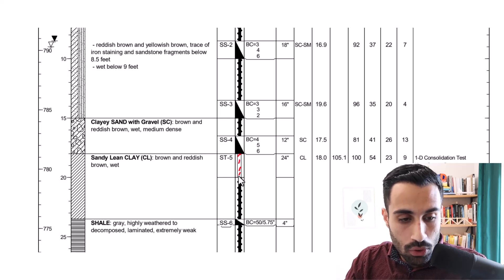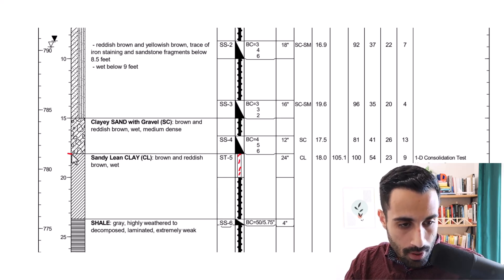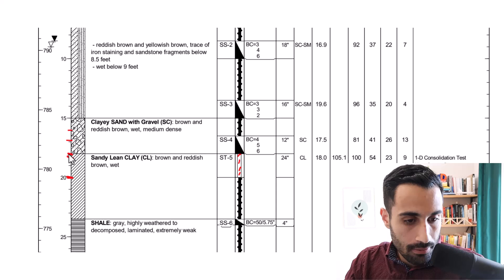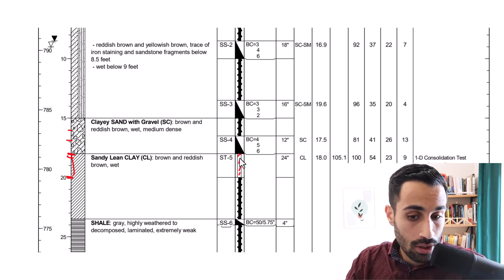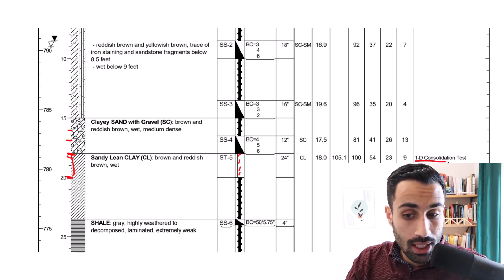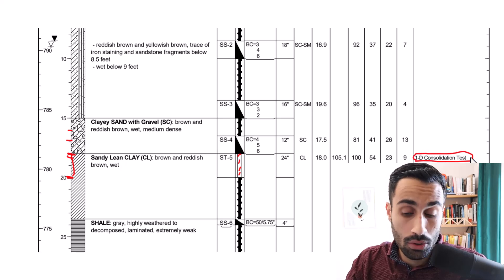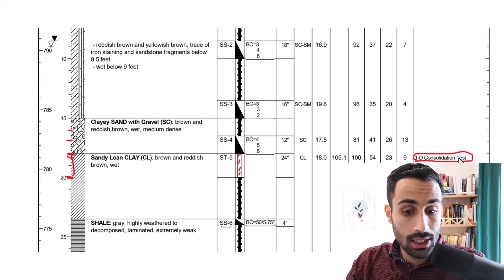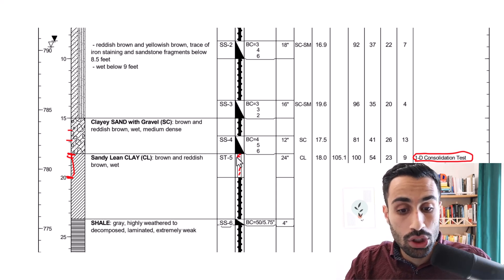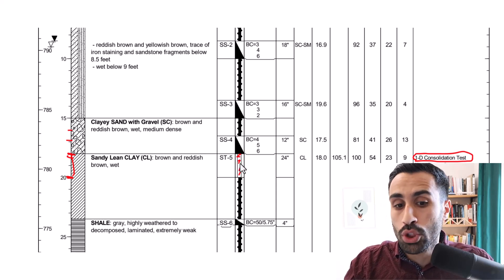Here is another Shelby tube that we do at a depth from 15, 16, 17, 18 to 20 feet. From 18 to 20 feet where we have sandy lean clay, we get a Shelby tube. We can get the unconfined compression test and we want to do consolidation, look at how that clay material consolidates. Consolidation test. We will need a Shelby tube for undisturbed soil sample.